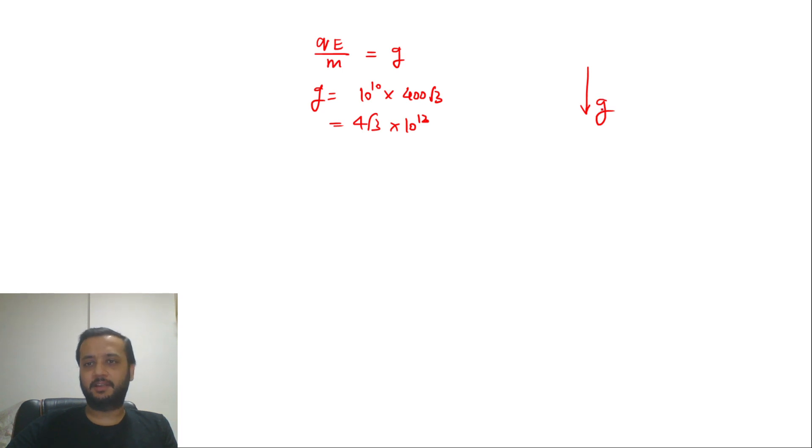Now this becomes a simple question of kinematics. We have to reach a particle from here to here, this is 5 meters given in the question. So range ki value we know that u² sin 2θ / g hoti hai.